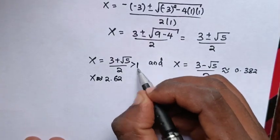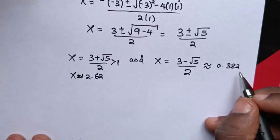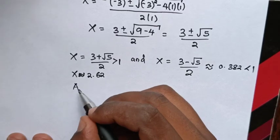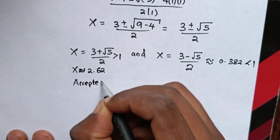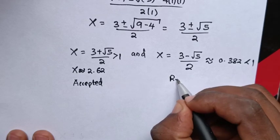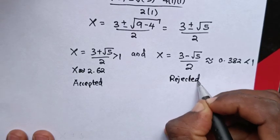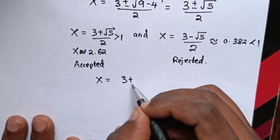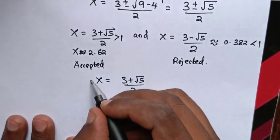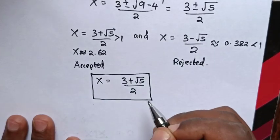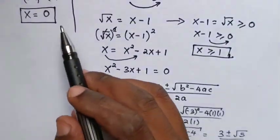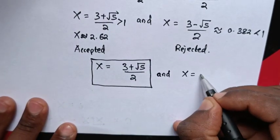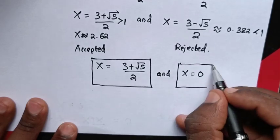We can see (3 plus square root of 5) over 2 is greater than 1 and is accepted, while (3 minus square root of 5) over 2 is approximately 0.382, which is less than 1 and is rejected because x should be greater than or equal to 1. Therefore, the values of x are (3 plus square root of 5) over 2, and x equals 0. Subscribe to the channel and see you in the next video!